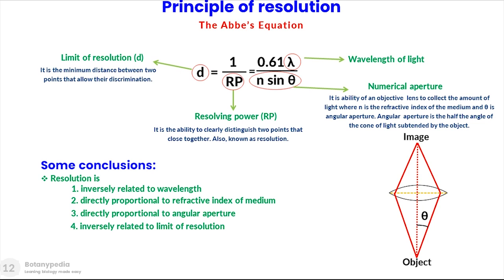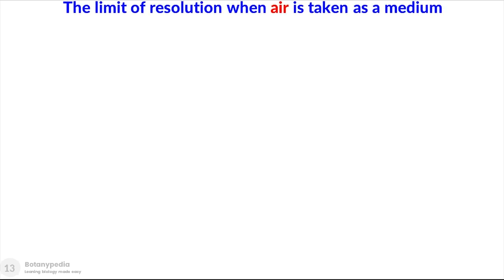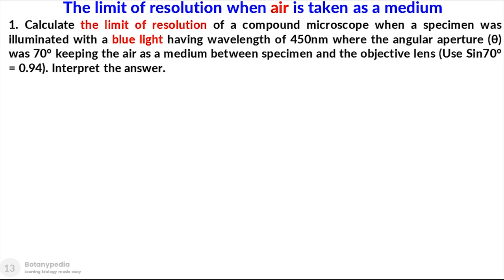Now, if we take air as a medium, what will be the limit of resolution of a compound light microscope? To understand this we will use a numerical problem. Calculate the limit of resolution of a compound microscope when a specimen was illuminated by blue light of wavelength 450 nanometers, where the angular aperture theta was 70 degrees and air was taken as a medium between the specimen and the objective lens. The value of sine theta is already provided for simplicity. We will calculate d, the limit of resolution, and then interpret the answer.